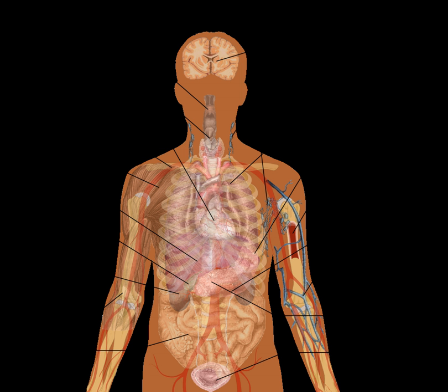Given the ancient origin of most vertebrate organs, researchers have looked for model systems where organs have evolved more recently and ideally have evolved multiple times independently. An outstanding model for this kind of research is the placenta, which has evolved more than 100 times independently in vertebrates, has evolved relatively recently in some lineages, and exists in intermediate forms in extant taxa. Studies on the evolution of the placenta have identified a variety of genetic and physiological processes that contribute to the origin and evolution of organs, including the re-purposing of existing animal tissues, the acquisition of new functional properties by these tissues, and novel interactions of distinct tissue types.